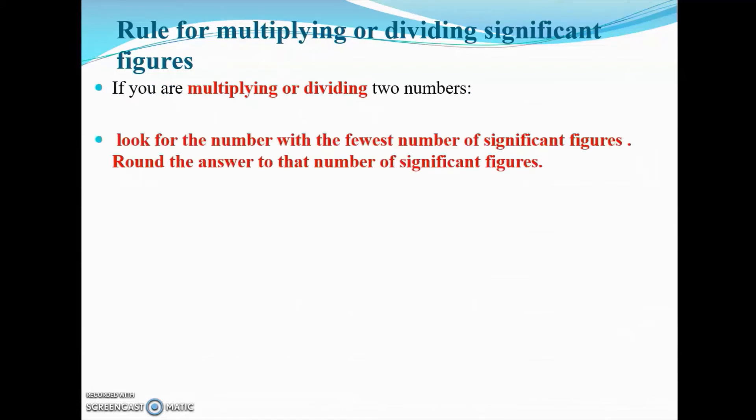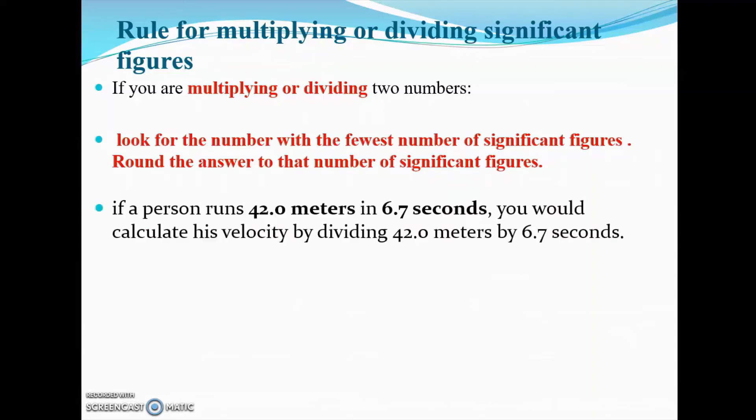Now for the rules for multiplication and division — they're just about as easy as addition and subtraction, just a little different. Look for the number with the fewest number of significant figures, then round the answer to that number of significant figures.